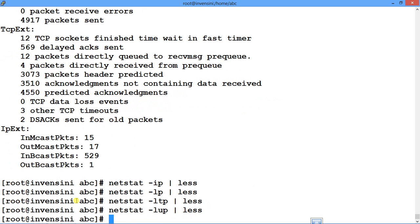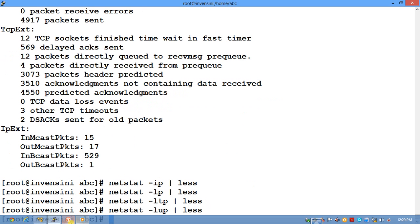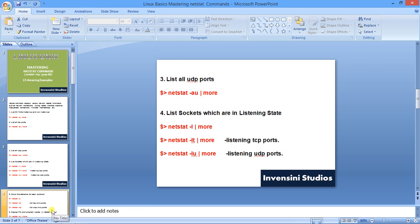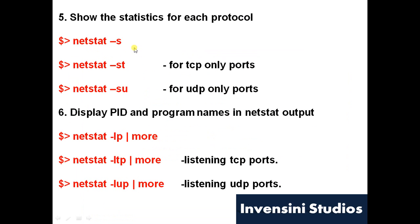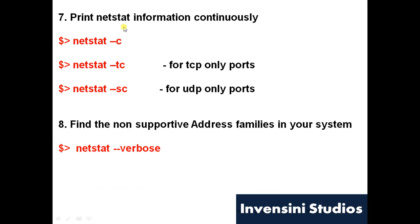Let's recap: to see network statistics, use netstat -s, which dumps all network statistics. To bifurcate, use -t and -u for TCP and UDP respectively. For more details like PID and program name, use netstat -lp; for TCP use -ltp, for UDP use -lup. If you want netstat information to continuously display, use netstat -c, and for TCP statistics continuously use -sc.